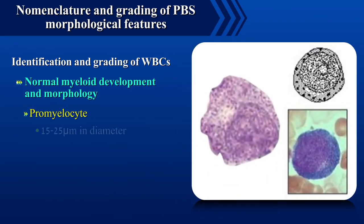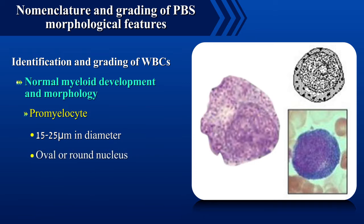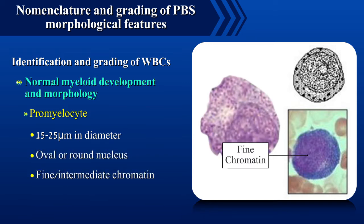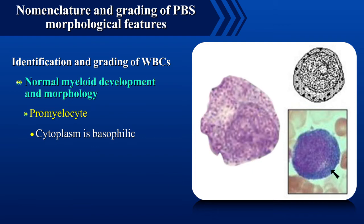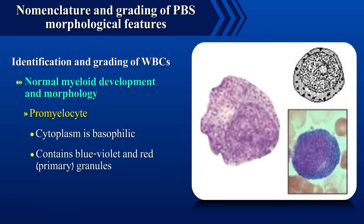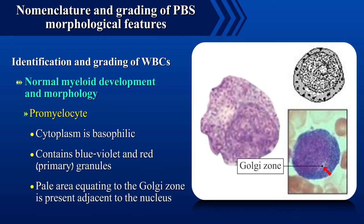Promyelocytes are 15 to 25 microns in diameter, have an oval or round nucleus with fine or intermediate chromatin and a usually visible and prominent nucleolus. The cytoplasm is basophilic and contains blue to violet and red granules. A pale area equating to the Golgi zone is present adjacent to the nucleus.